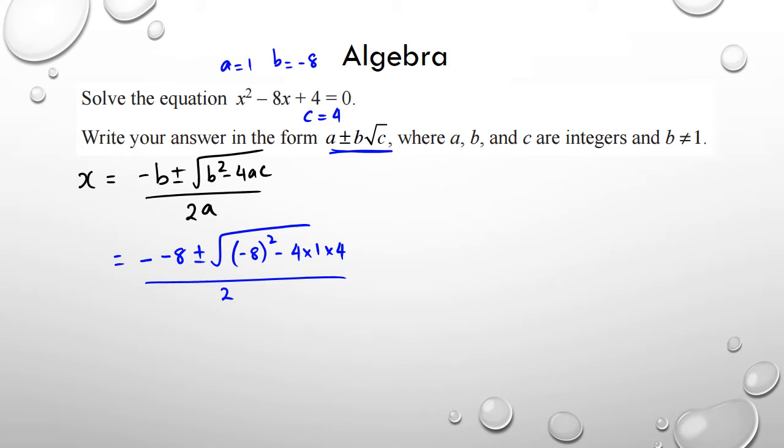Simplifying this, I have 8 plus or minus 64 minus 16 over 2. This can be written as 8 plus or minus 48 over 2.